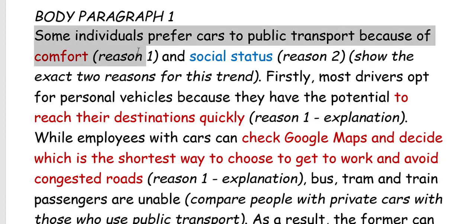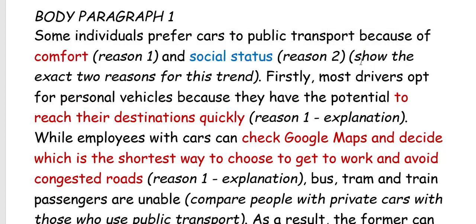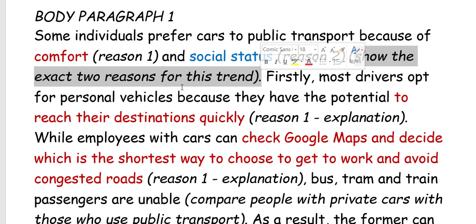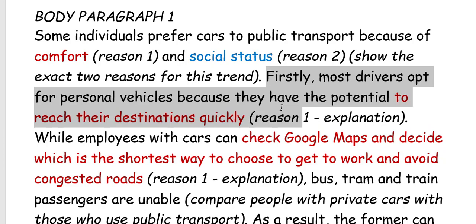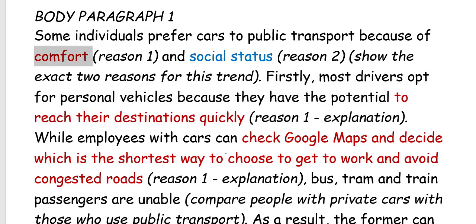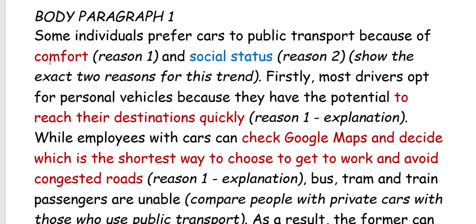Now let's look at the first body paragraph. 'Some individuals prefer cars to public transport because of comfort and social status.' Here I show the exact two reasons for this trend: the first reason is comfort and the second reason is social status. Next: 'Firstly, most drivers opt for personal vehicles because they have the potential to reach their destinations quickly.' Here I explain how comfort is achieved — most drivers like cars because they can reach destinations quickly.